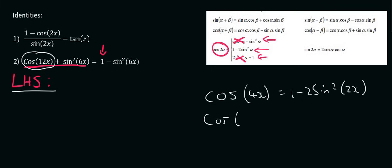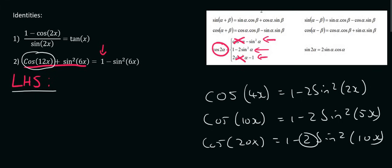If you had cos 10x then that would become 1 minus 2 sin squared of 5x. If you had cos of 20x then it would become 1 minus 2 sin squared of 10x. So this 2 is always a 2 but this angle must always be half of that angle.